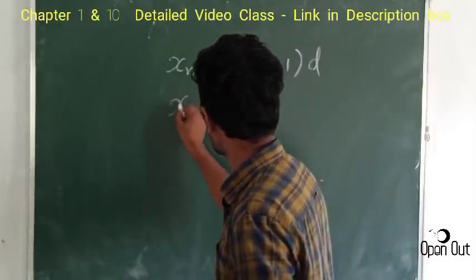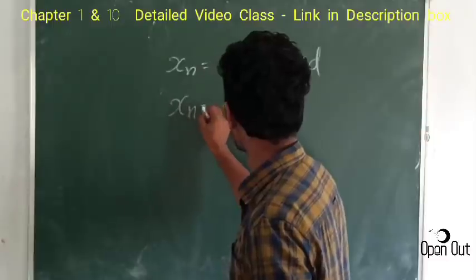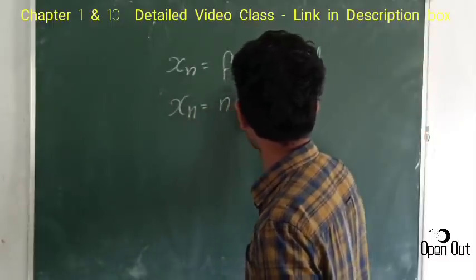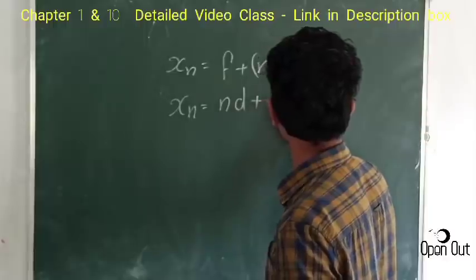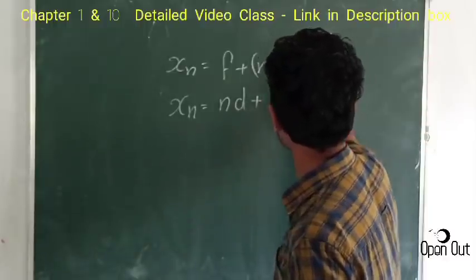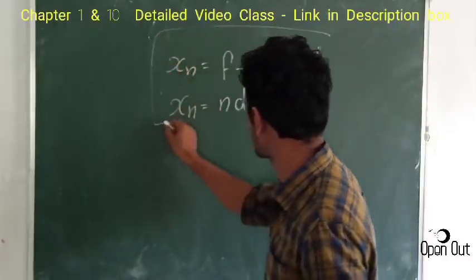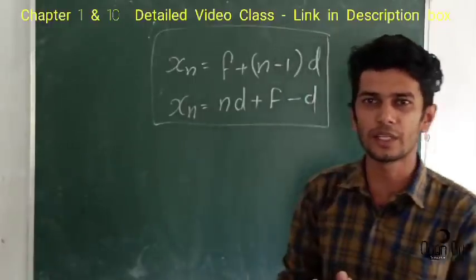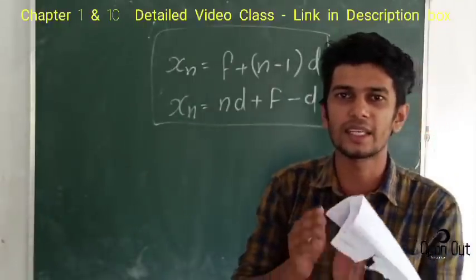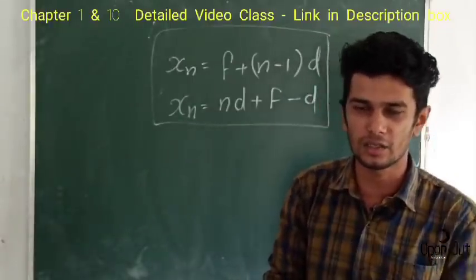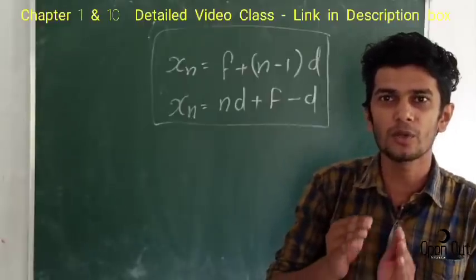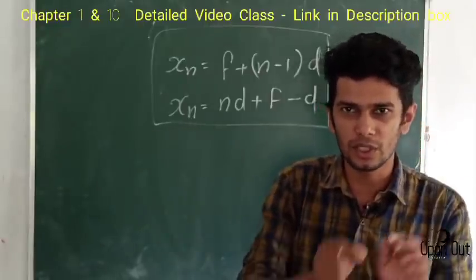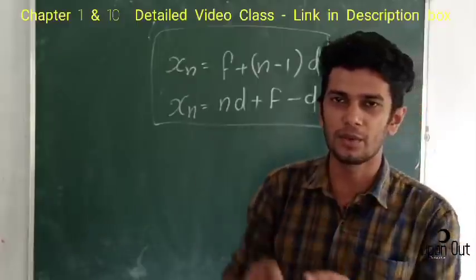This is the equation for your question: nd plus f minus d. This equation will give us two equations. Now you will ask questions — we will ask about the 20th and 10th, and one question for each sequence.